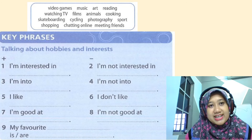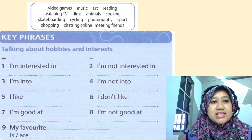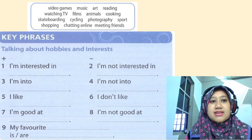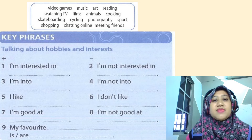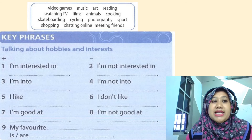This is going to be your speaking activity. You're going to record yourself and talk about your hobbies and interests. The words from your first activity are: video games, music, art, reading, watching TV, films, animals, cooking, skateboarding, cycling, photography, sports, shopping, chatting online, meeting friends. You don't actually have to use these words — if you have other hobbies, you can use those instead.